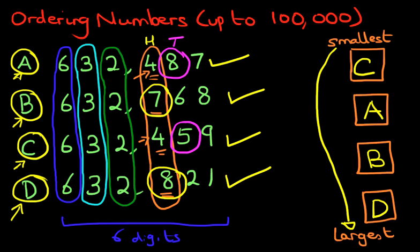So that is how we determine how to order numbers up to a hundred thousand. First, determine how many digits there are. If they are all the same, start on the left hand side and gradually work your way across.